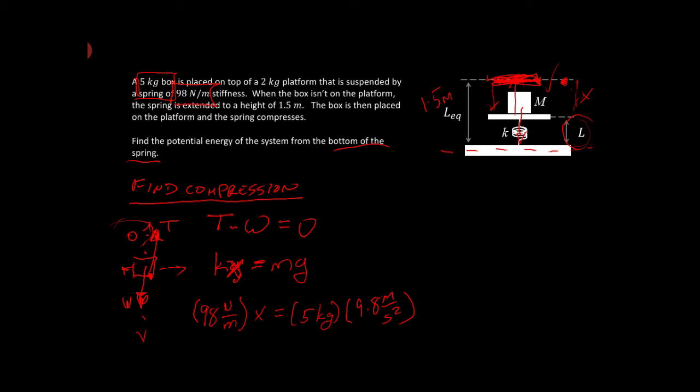So we have 5 kilograms times 9.8 meters per second squared. All right, so that's going to mean I'm going to have to multiply these two guys out. So that's 5 times 9.8, 5 kilograms times 9.8 meters per second squared.